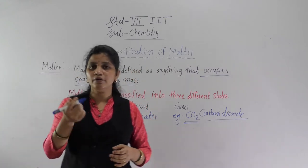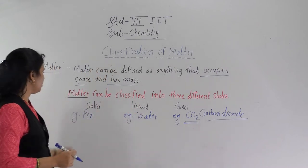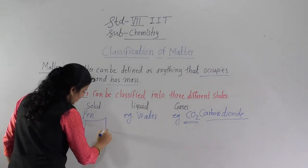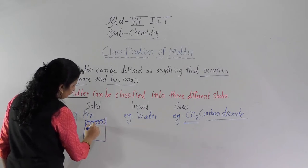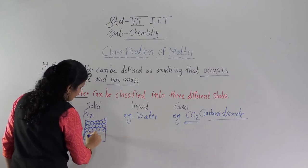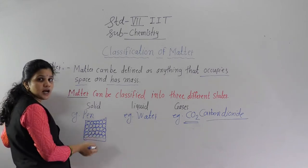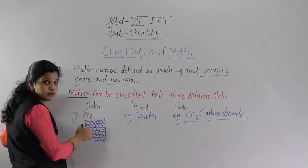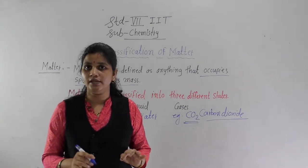Let us remind ourselves of these points from the fifth standard. Now we will look at the molecular arrangement. In the solid state, the molecules are very closely packed with no space in between. Because of this, solid substances have a fixed shape. Any matter is made up of molecules, and in the solid state those molecules are very closely packed.